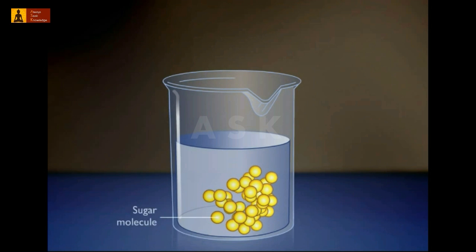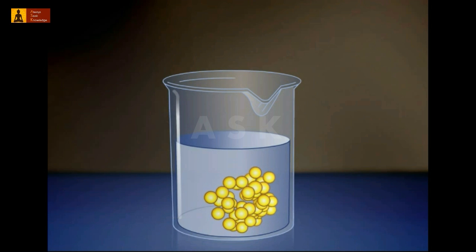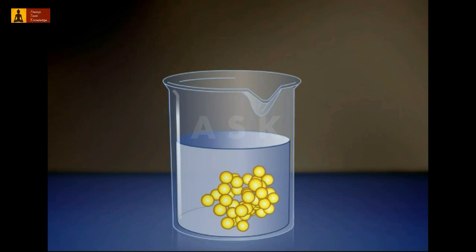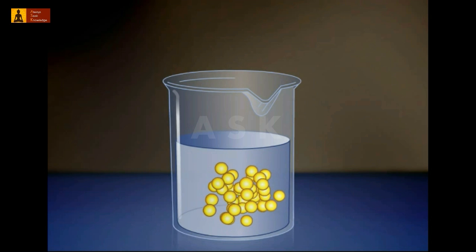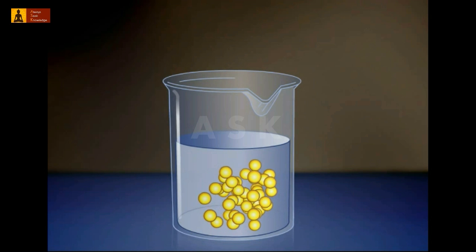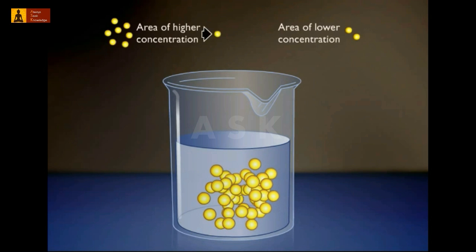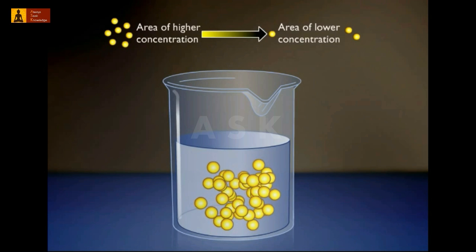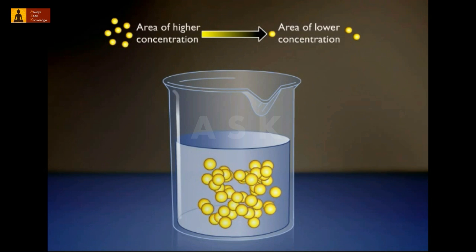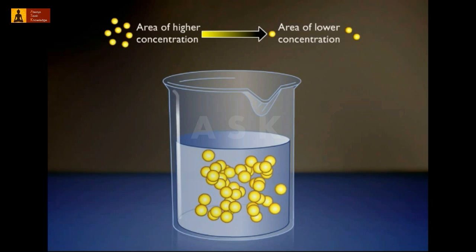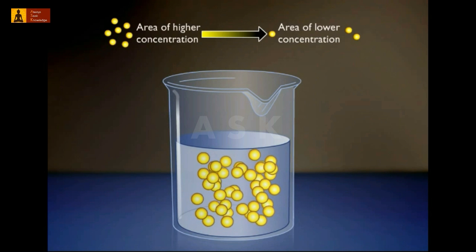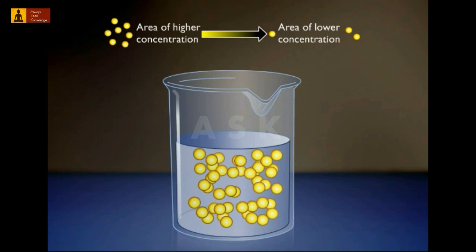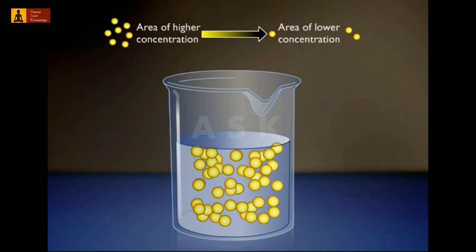Individual sugar molecules move randomly and constantly from the area where they are common to the area where they are scarce. This type of motion — when molecules move from areas of their higher concentration to areas of their lower concentration — is called diffusion. Diffusion continues until all the sugar molecules become evenly dispersed throughout the beaker.